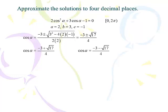So cosine α equals negative 3 plus or minus the square root of 3² minus 4 times 2 times negative 1, all over 2 times 2. That works out to negative 3 plus or minus the square root of 17, over 4. So our two cases are: negative 3 plus √17 over 4, and negative 3 minus √17 over 4.